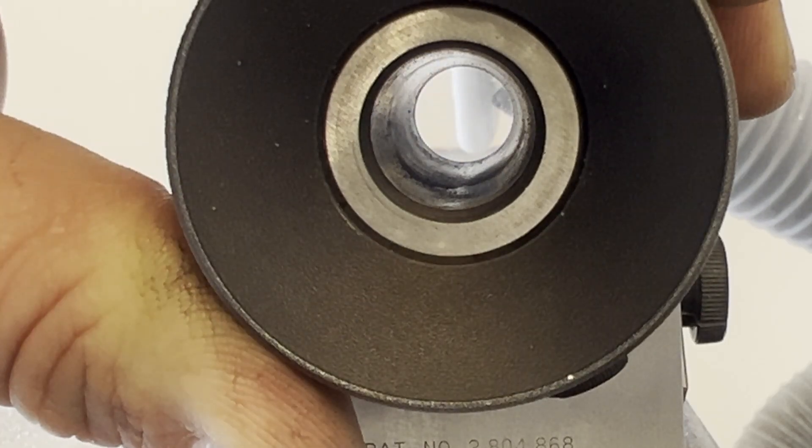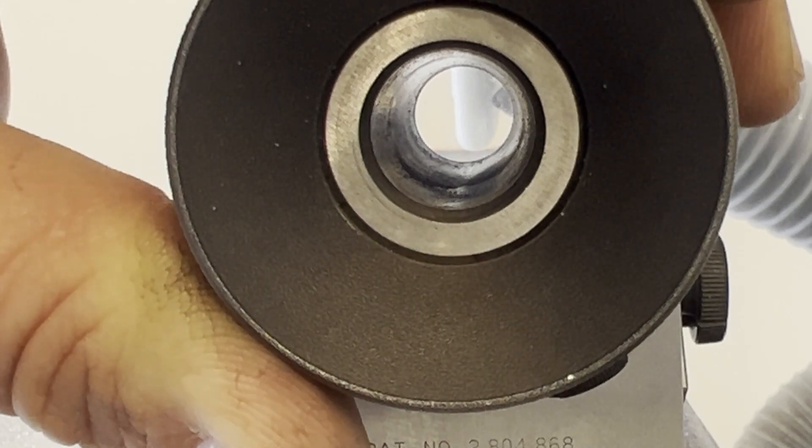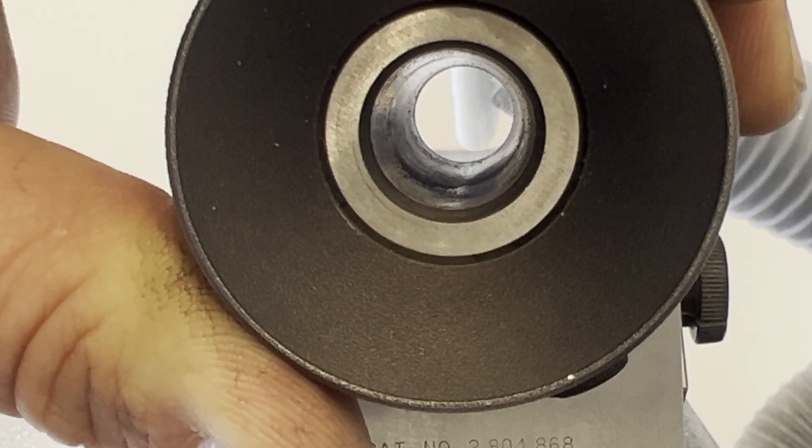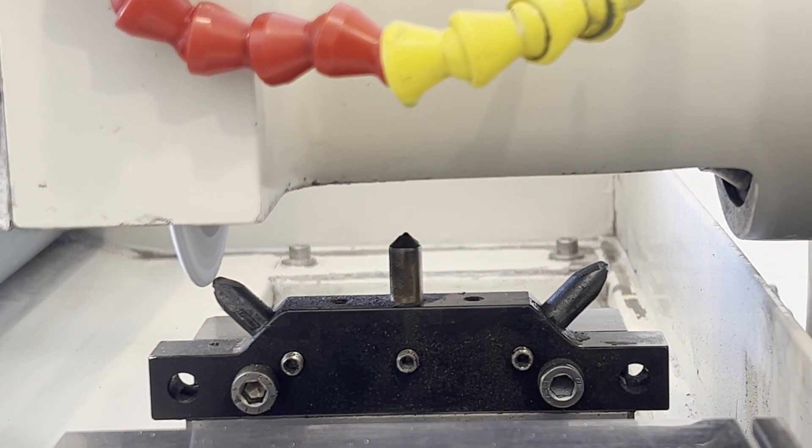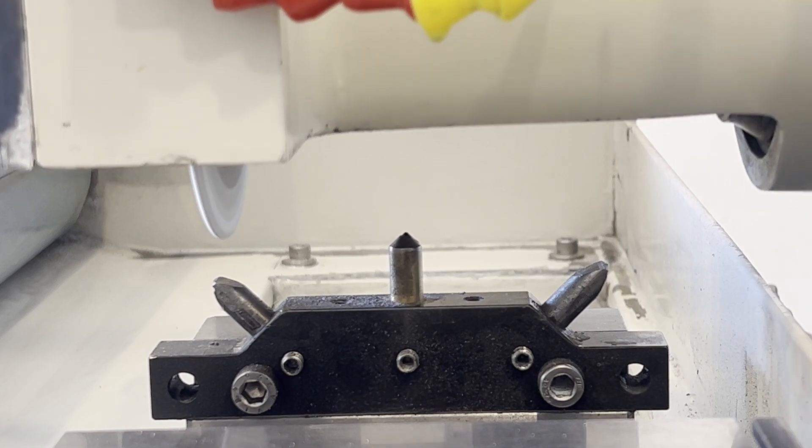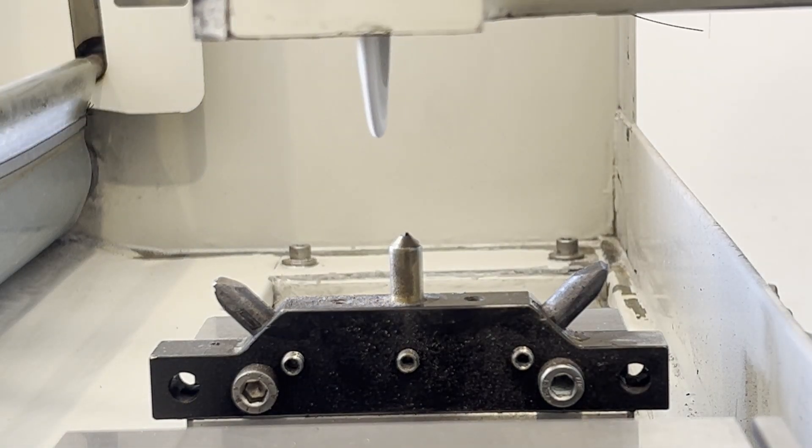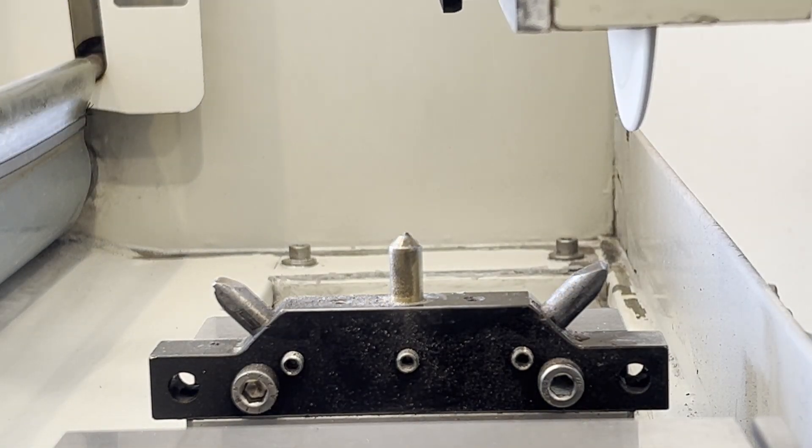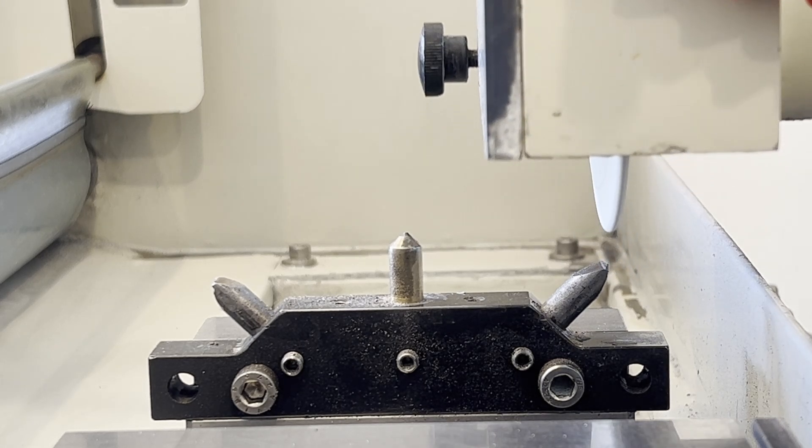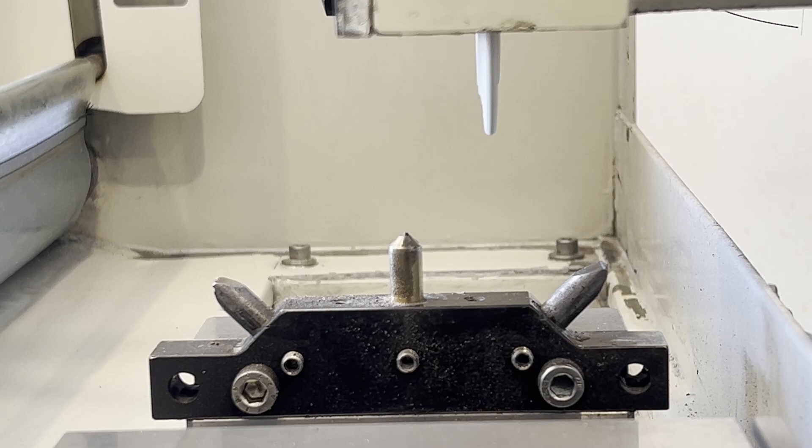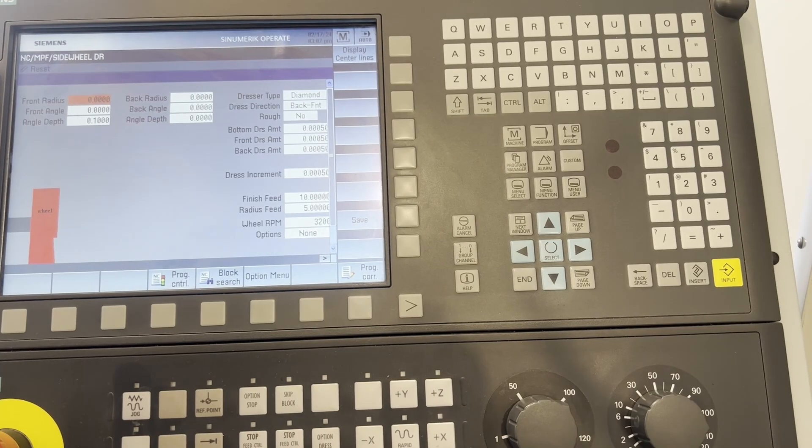This is the CNC grinder dressing that exact same size. You can see it goes a lot quicker, and you could even do the back taper programming the CNC.